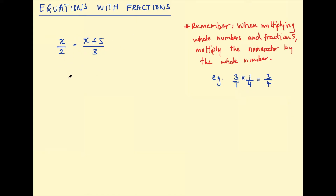So let's look at this first example. We've got x over two equal to x plus five over three. The goal here is to find the value of x — what number can we plug in for x to make the left hand side equal to the right hand side? And what's kind of making this tricky? It's these denominators, this two and this three — the fractions. We want to get rid of those fractions, or clear the fractions.